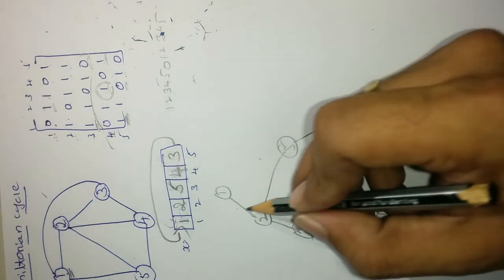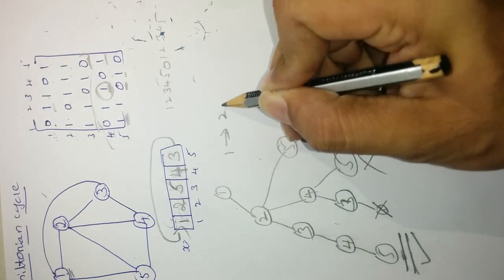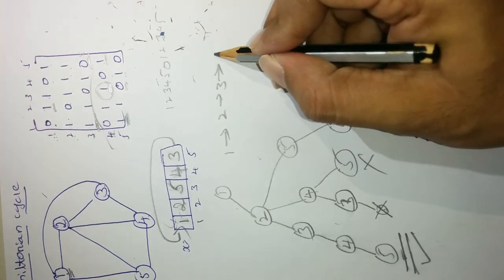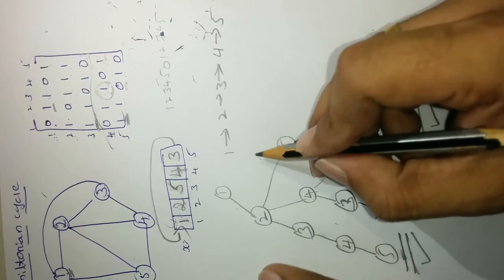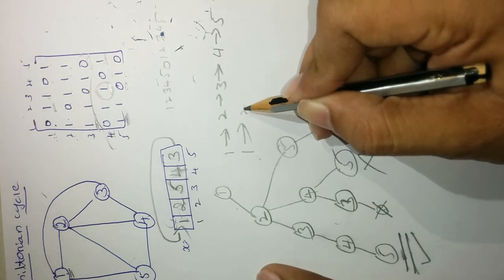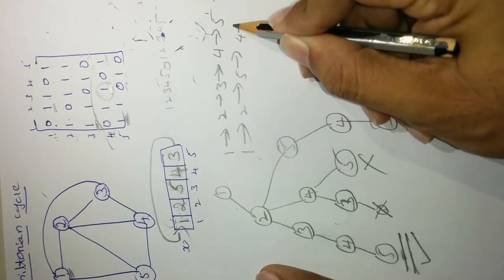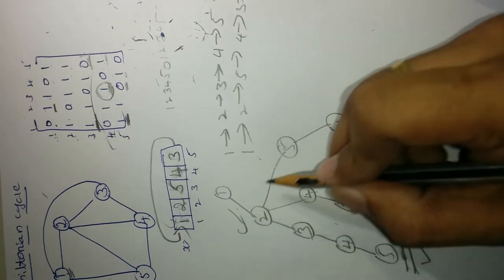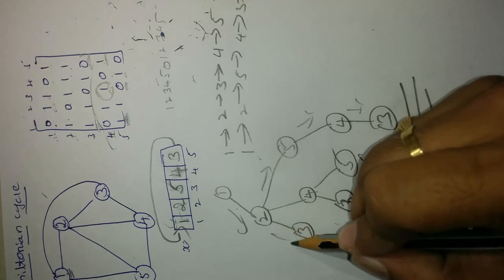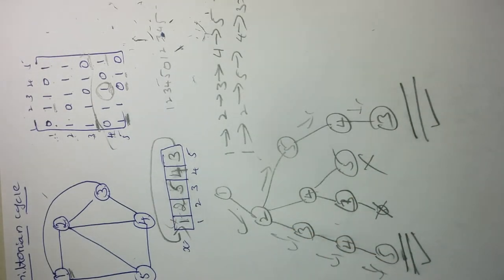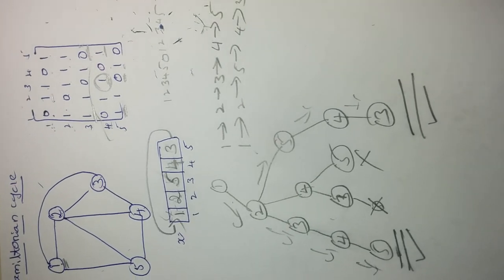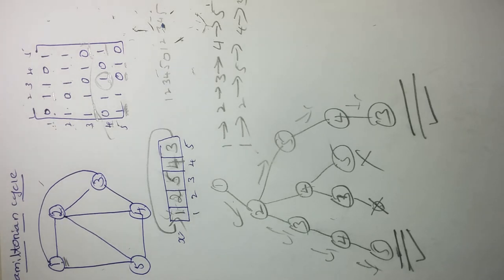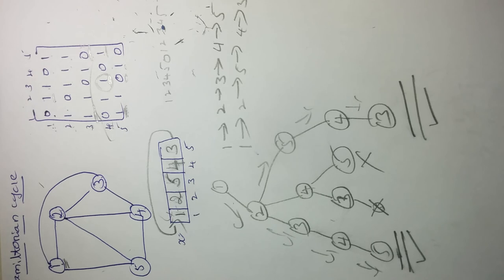We have two solutions for this Hamilton cycle problem. First solution: 1, 2, 3, 4, 5. Second solution: 1, 2, 5, 4, 3. This is a very important question from an examination point of view. For upcoming sessions we will discuss graph coloring to complete Module 5. If you have any doubts or clarifications please message in the comment box. For more updates please subscribe to the channel. Thank you.